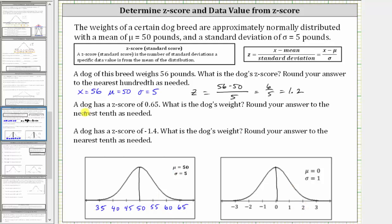For question two, a dog has a z-score of 0.65 — what is the dog's weight? Because the z-score is 0.65, we know the dog's weight is 0.65 standard deviations above the mean. A z-score of 0.65 on the standard normal distribution is approximately here.